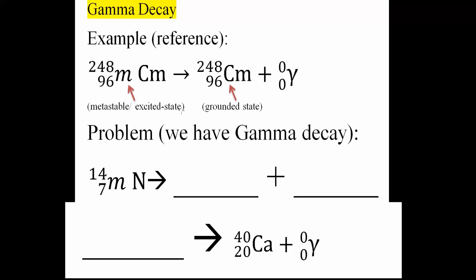Okay, in this video we will be going over gamma decay, and so as an example reference, this is what we have. So we have curium with the atomic mass of 248 and atomic number of 96. We write an M, meaning metastable or excited state. This occurs when we're dealing with gamma decay.